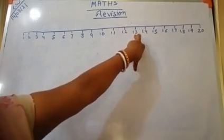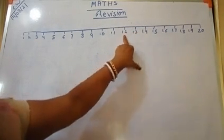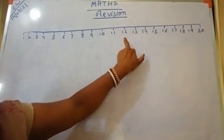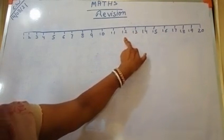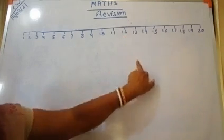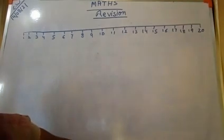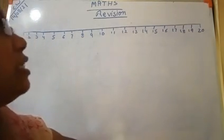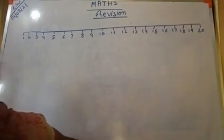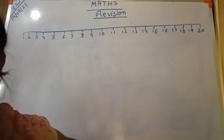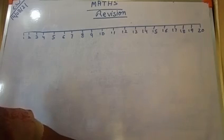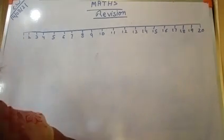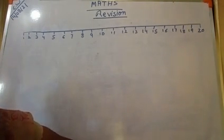Whatever number comes in front of the other back number is called the before number. For example, 13 — the front number will be 12. So 12 is the before number of 13. Before number is also called the front number — whatever the front number, it is called the before number.